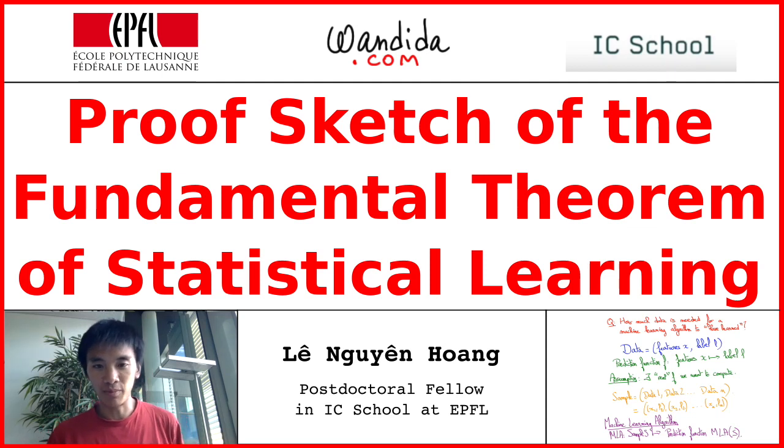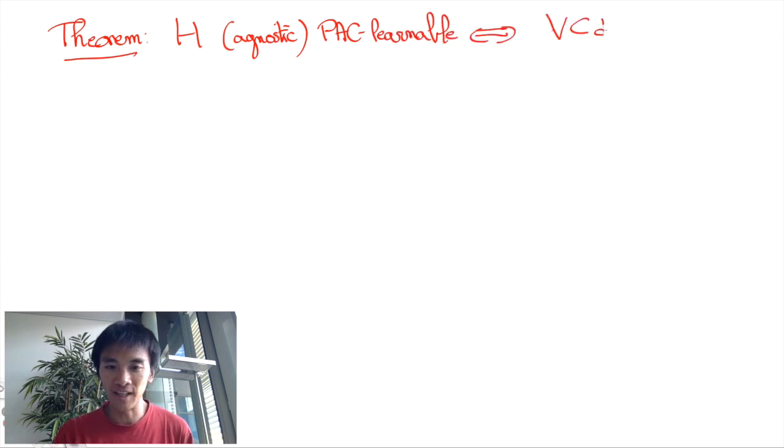In this video, I will give a rough sketch of proof of the fundamental theorem of statistical learning. Recall the theorem. It asserts that a hypothesis class H is agnostic PAC learnable if and only if its VC dimension is finite.